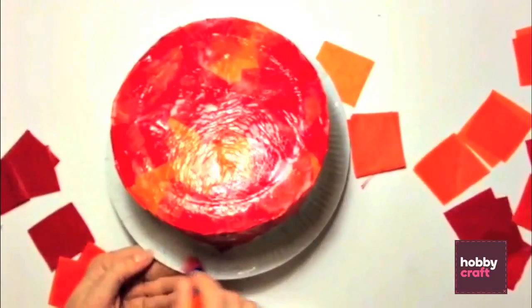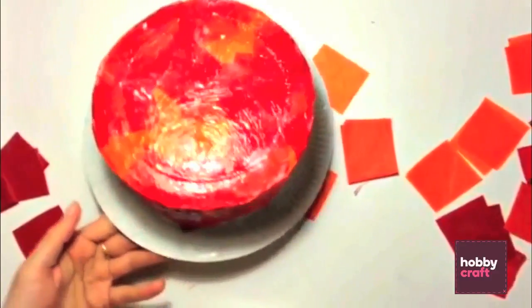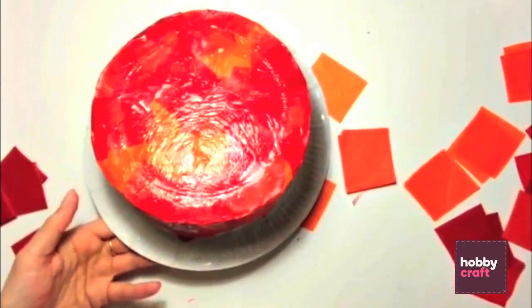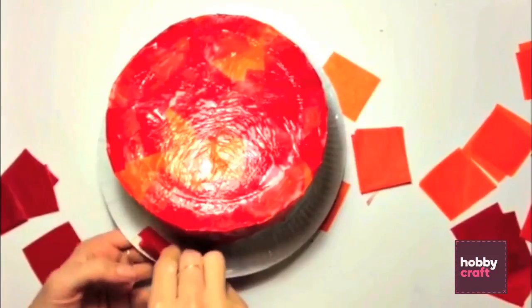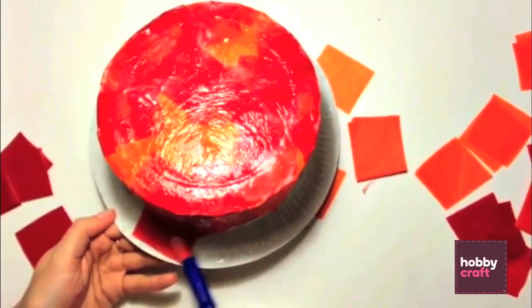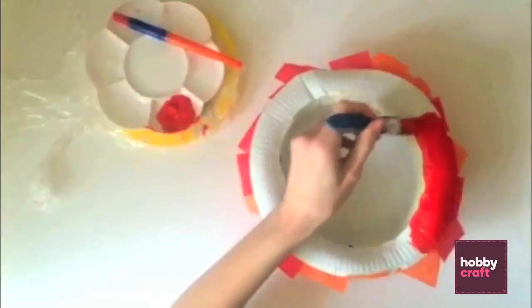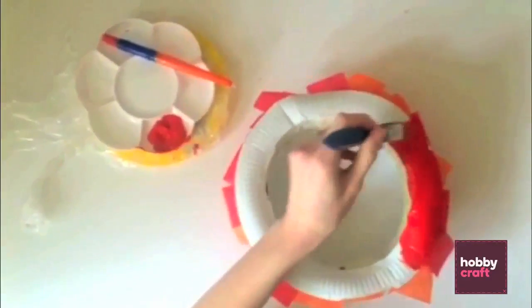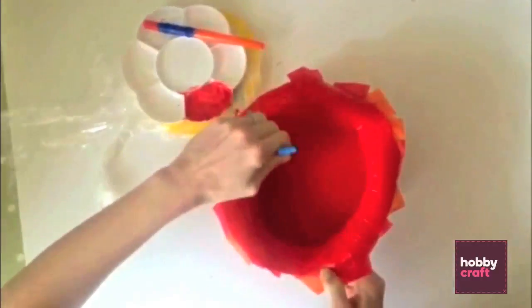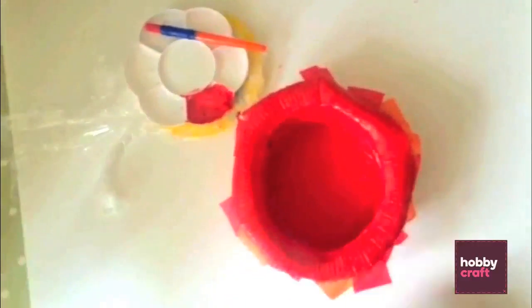This doesn't need to be neat, in fact it's better if it isn't. Once the outside is dry, cover the inside of the hat with paint and trim off any excess tissue paper from the rim of the hat.